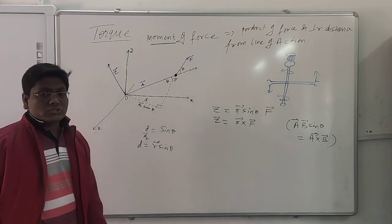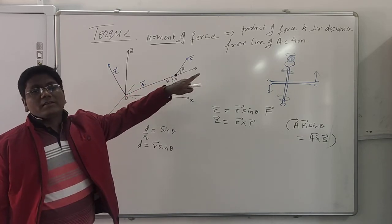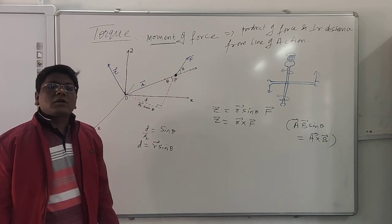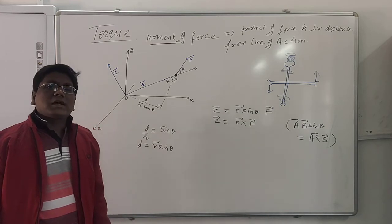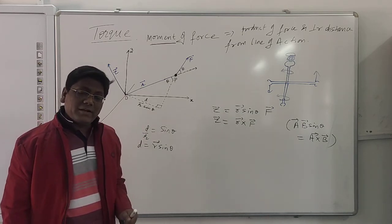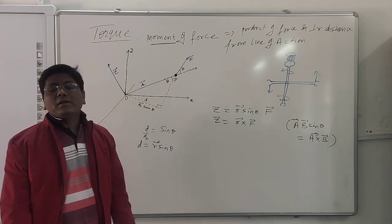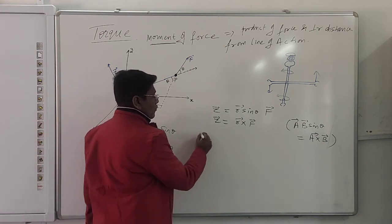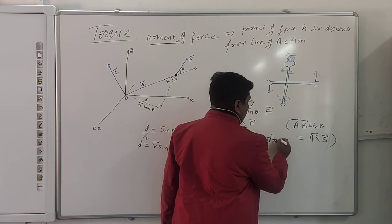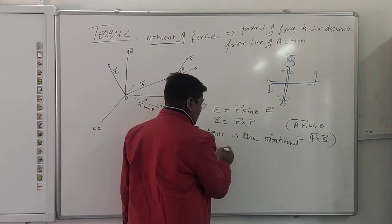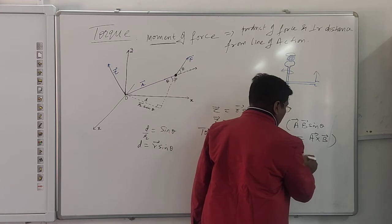Now there is one very important thing to understand here. In linear motion, when you want to move something, you apply force. Similarly, in rotatory motion, you have to apply torque to rotate the body. So torque is the rotational analog of force in rotational motion — just as force causes linear motion, torque causes rotation about an axis.